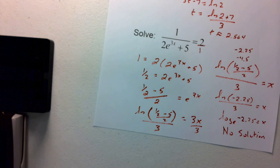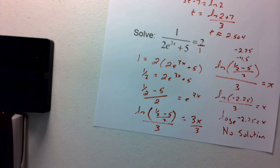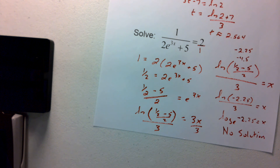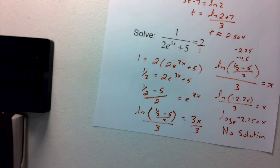That gives you an idea of how to solve exponential equations with base e, and how to recognize when there is no solution. Remember: get the e by itself just like a regular equation, then take the natural log of both sides and solve for the variable. Good luck, and if you have questions, please let me know.